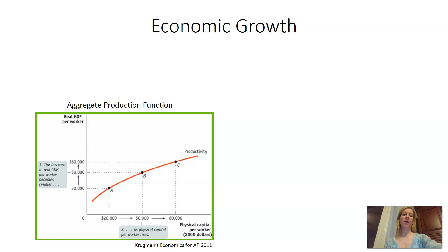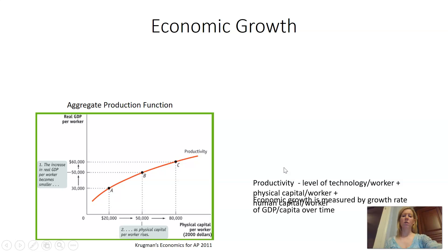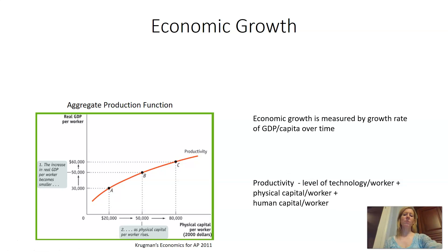The first macroeconomic model we're looking at is the aggregate production function. Output per employed worker is a measure of average labor productivity. When we talk about productivity, we're looking at the contributions from technology per worker, from physical capital per worker, and from human capital per worker. Economic growth is measured by the growth rate of GDP per capita over time, calculated as GDP divided by the population.